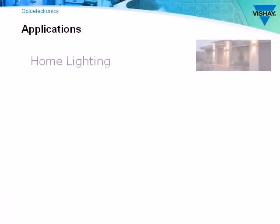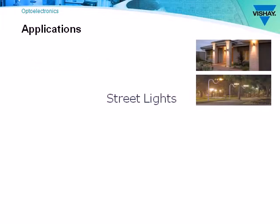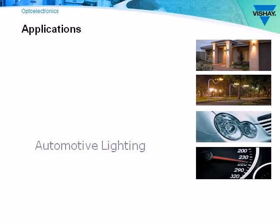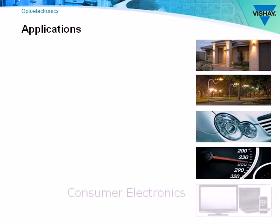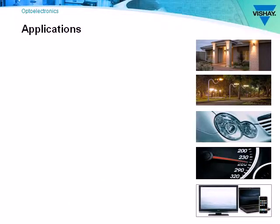When it gets dark and the front porch and street light automatically turn on, they are using an ambient light sensor. When your car lights turn on when entering a tunnel or at dusk, it's using an ambient light sensor. And when the power to the backlight on your touchpad phone or notebook PC automatically adjusts, it's using an ambient light sensor.